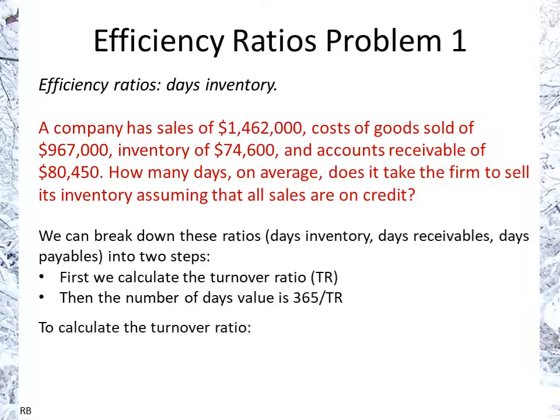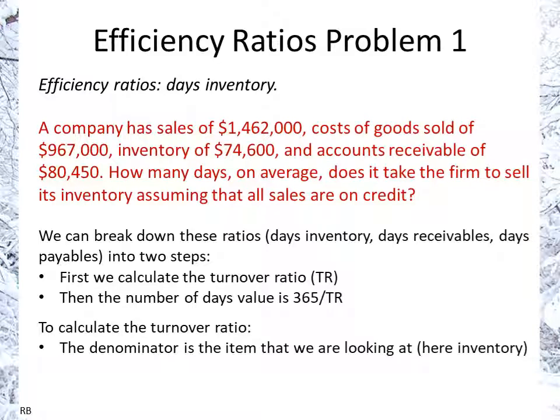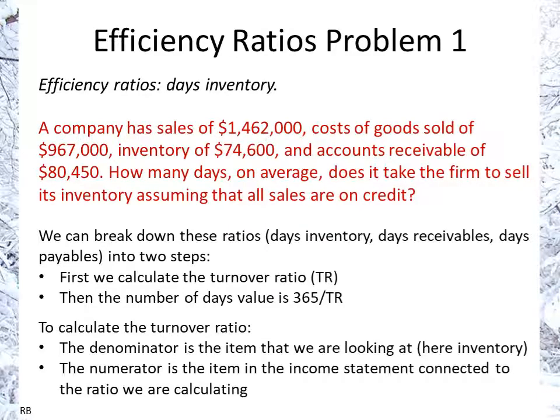In all cases, the denominator of the turnover ratio will be the item that we're looking at. Here we have inventory, so that will be the denominator. Technically, ideally we would use the average inventory — the weighted average over a period. The numerator is the item in the income statement or cash flow statement that is connected to the ratio we're calculating.